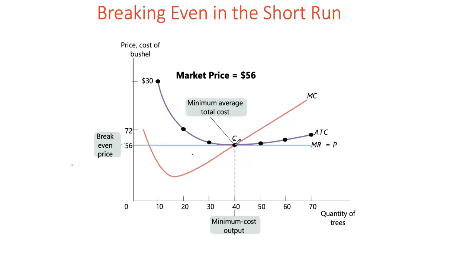Whenever price equals the minimum point of our ATC, that is the break-even price. Higher than $56, the firm earns positive economic profits. Lower than $56, the firm necessarily earns economic losses. Interestingly, the marginal cost curve always intersects the ATC curve at its minimum point. So when a firm is earning zero economic profits or operating at break-even price, all three are equal: price equals minimum ATC, which also equals MC.